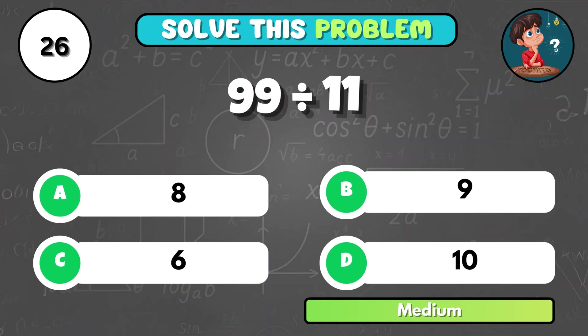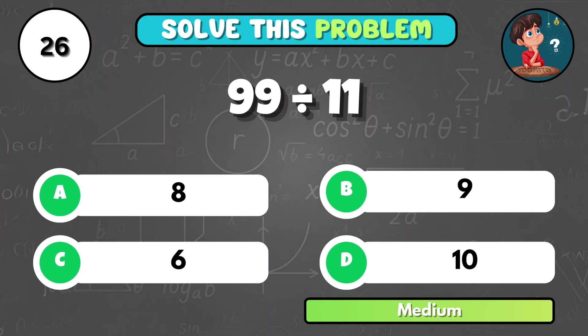How many times does 11 go into 99? It's B, 9.